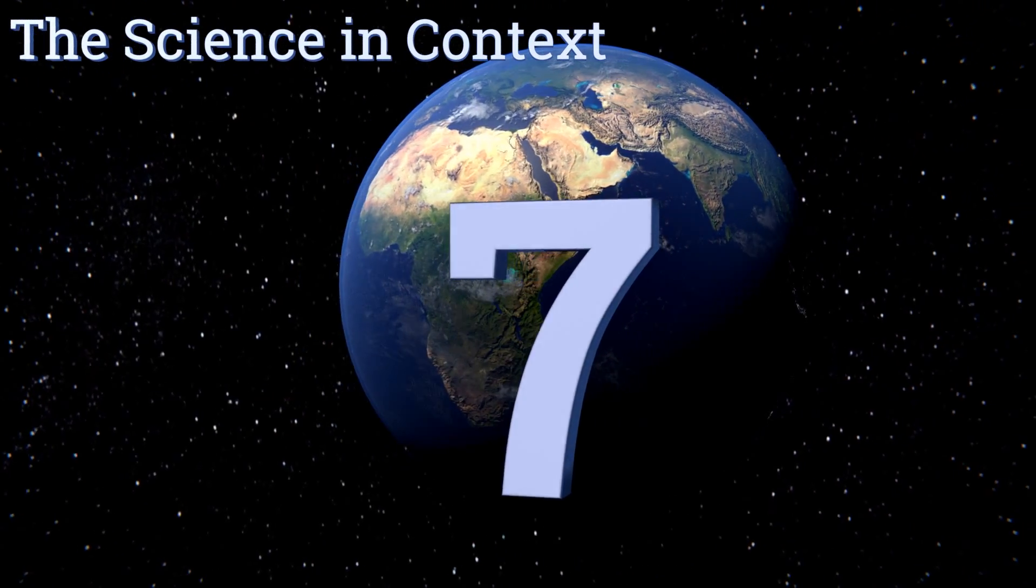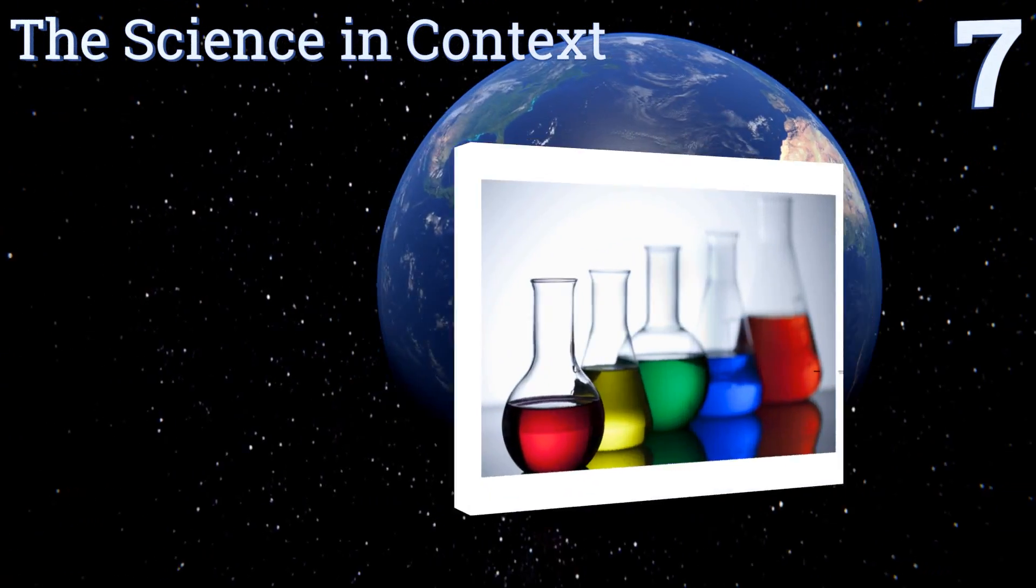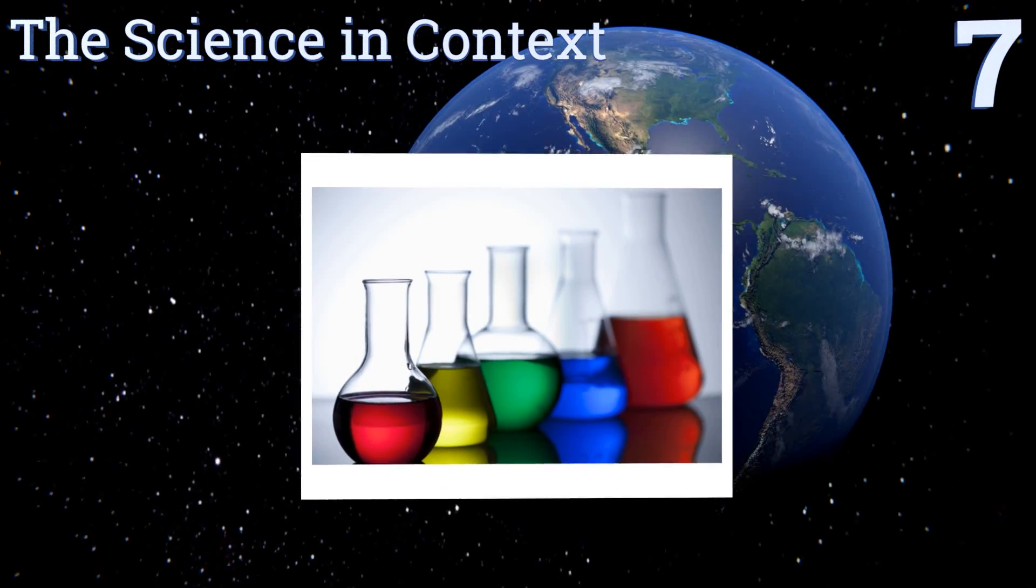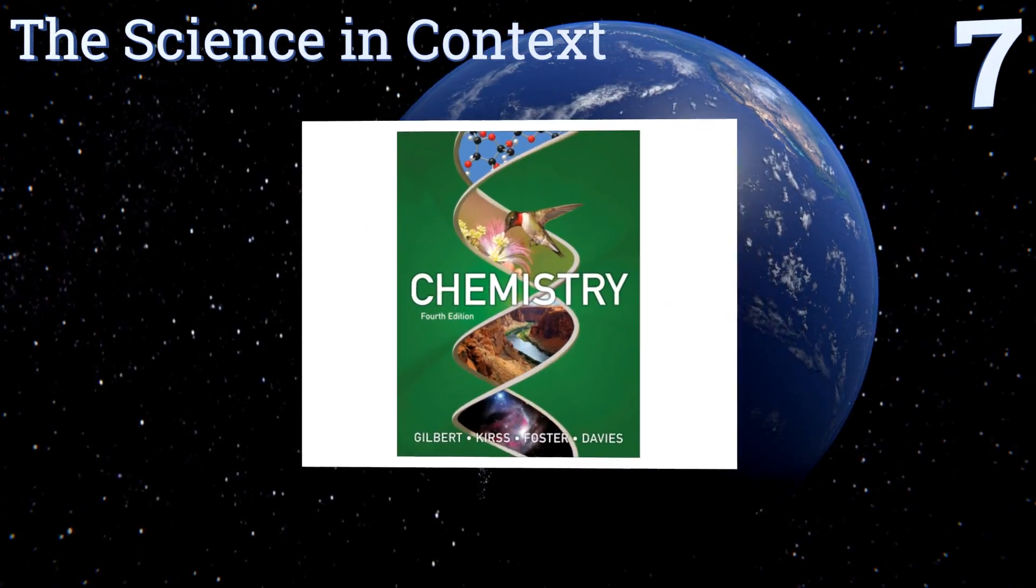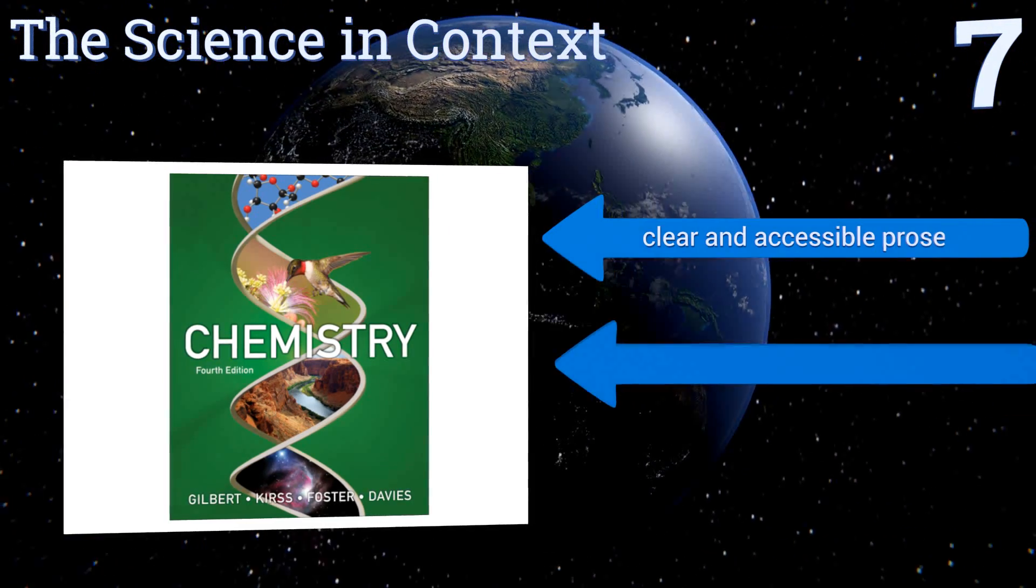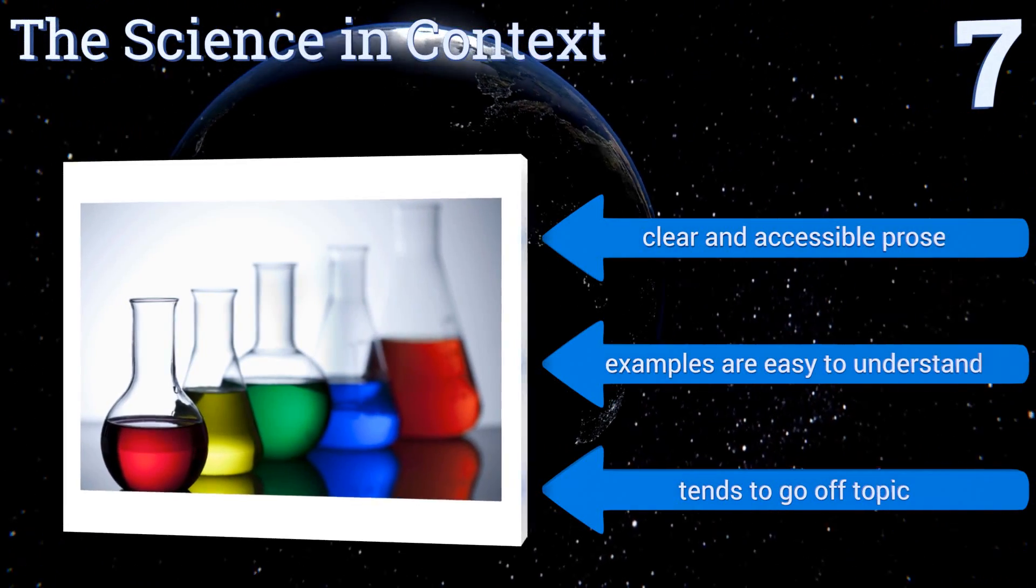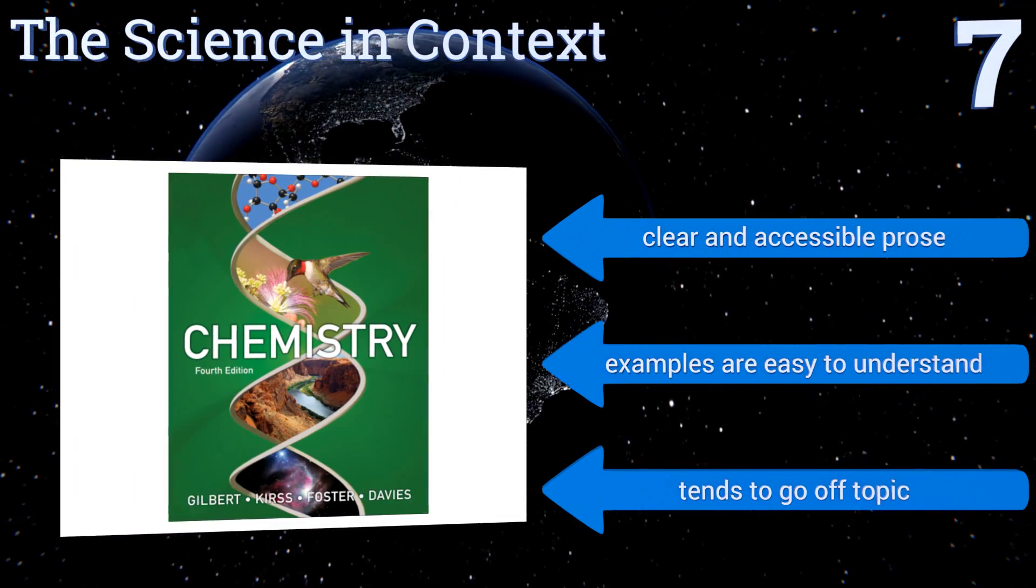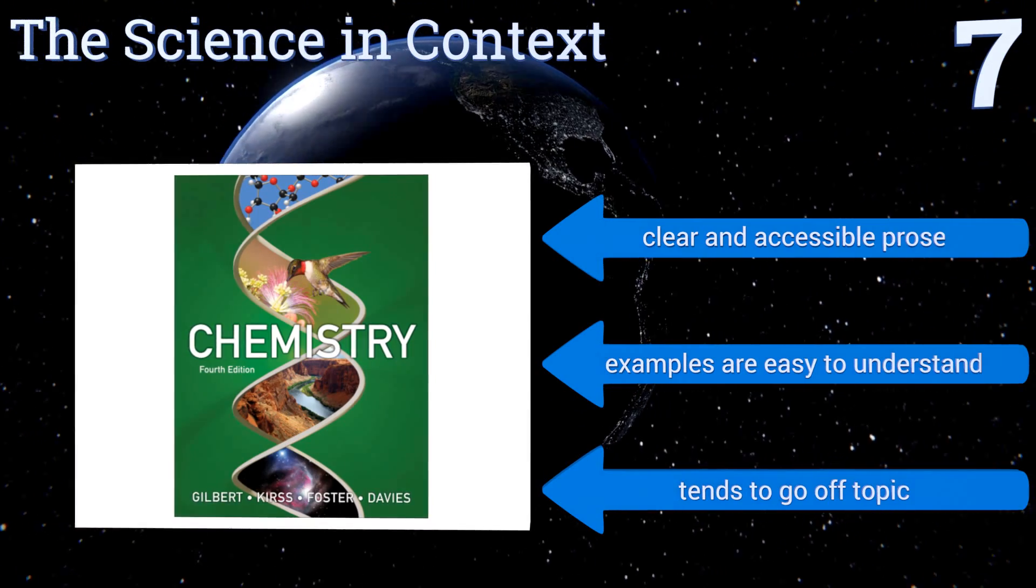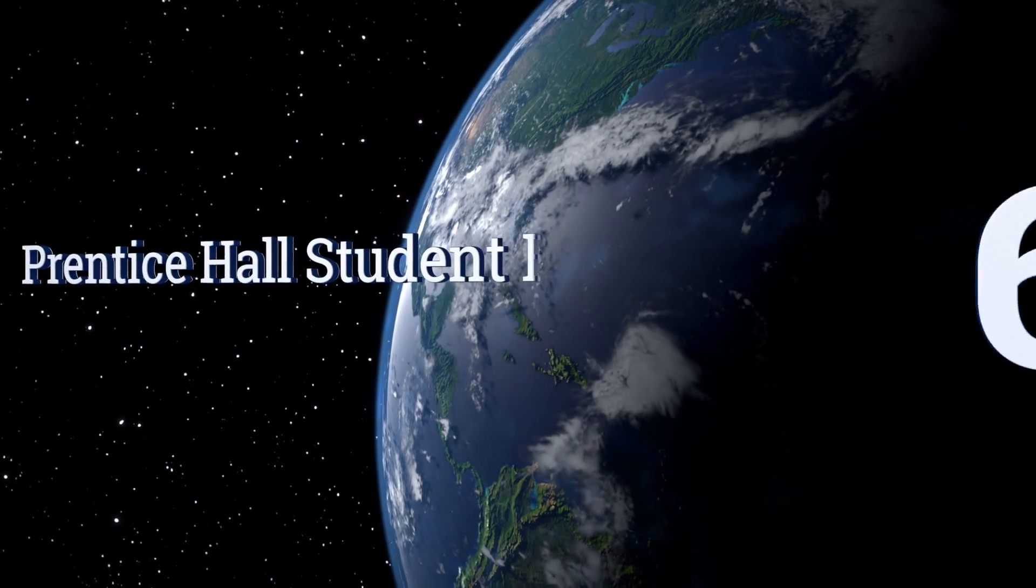Starting off our list at number seven, The Science in Context by Professors Gilbert, Curse, Foster, and Davis can be used as a reference guide thanks to its many charts and graphs. It teaches the basics very well. Unfortunately, the answer key at the back of the book is often inaccurate. It's written with clear and accessible prose and the examples are easy to understand, but it tends to go off topic.